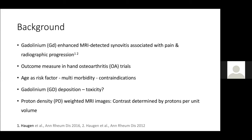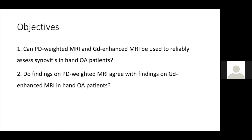Gadolinium contrast is generally considered to be safe; however, gadolinium deposits have been detected in basal ganglia, muscle, liver, and skin tissue, questioning whether repeated examinations might be harmful. Magnetic resonance of protons forms the basis of MRI, and these signals can be weighted to reflect the density of protons. Proton density-weighted MRI images do not require a contrast agent and can distinguish between fluid and cartilage in joints. Our main objective was to assess if proton density-weighted MRI and gadolinium-enhanced MRI can be used to reliably assess synovitis in hand-OA patients. We also wanted to explore if findings on proton density-weighted MRI agree with findings on gadolinium-enhanced MRI in hand-OA patients.